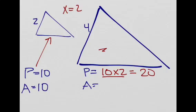Now, the area will be 10 times x squared. So, 2 squared, and this is equal to 40.